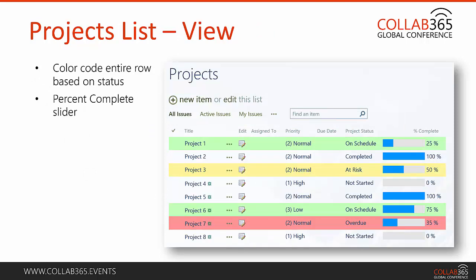I also have a projects list view with two things going on: I'm color coding entire rows based on status, and I have a percent complete slider. At a glance, I can tell which projects are on schedule, which are at risk shown in yellow, and which are overdue shown in red. The percent complete slider gives additional visual context — I can see which projects are complete, half done, or barely started. From a usability standpoint, people don't have to think as hard; they can immediately see any problem areas or things that need to be addressed.